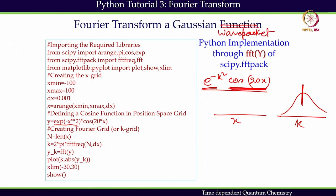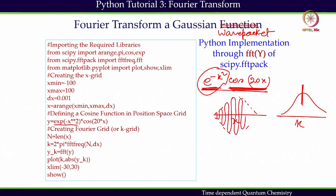This first component is the slow component, considered to be an envelope function. In the x-domain it should have an envelope function, but it also has an oscillatory part. This is what the x-domain function looks like, and we need to find out what the k-domain function looks like.